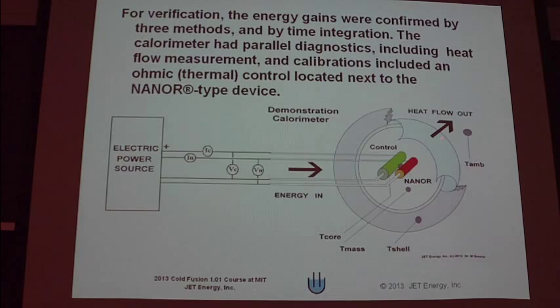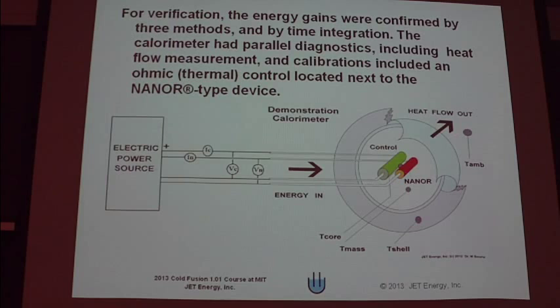We're able to measure: one, we can do our delta T measurement; we can do the full-bore calorimetry like I showed you yesterday; and we can measure the heat flow. By setting it up this way we have three different systems for verifying if there is excess heat. Then we compare the heat coming out to the input, and because this is close to DC, it's voltage times current times the time integral.